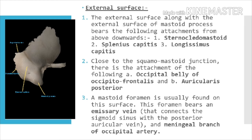This mastoid foramen bears the following structures: number 1, an emissary vein; and number 2, the meningeal branch of the occipital artery. This emissary vein usually connects the sigmoid sinus with the posterior auricular vein.